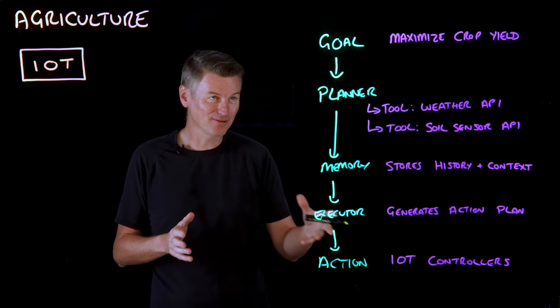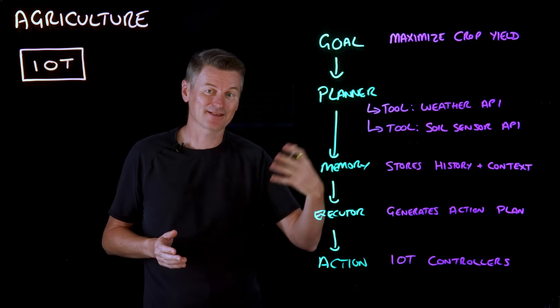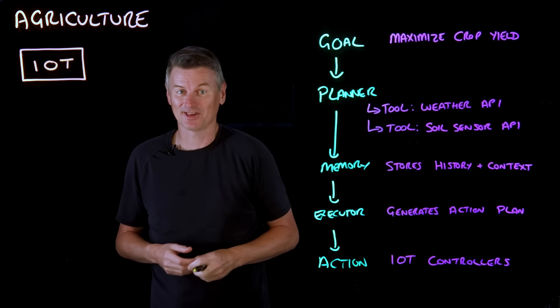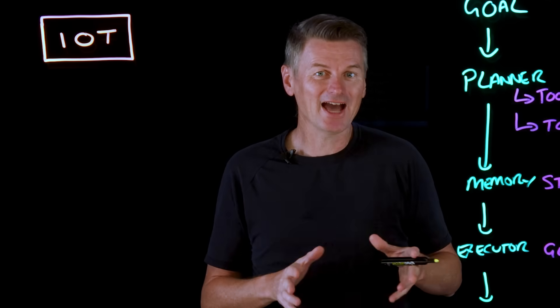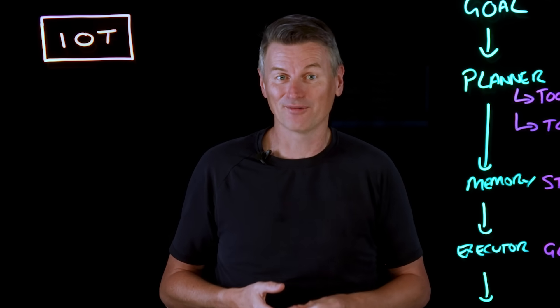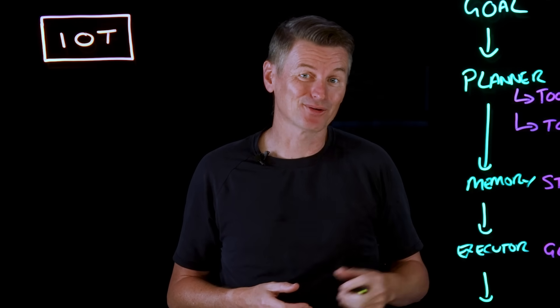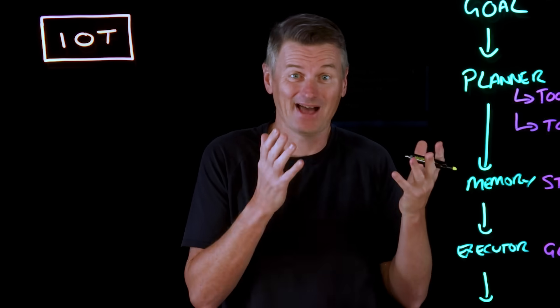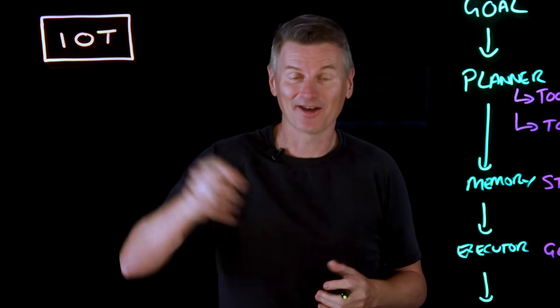And this process is both iterative, it's continually updating planning, execution, and action based upon changing sensor data. And it's also self-improving where the agent learns from results such as crop growth outcomes and adjusts its decisions as it becomes better at resource efficient farming. So agricultural AI agents interfacing with IoT controllers.